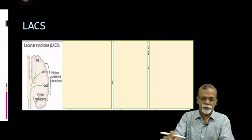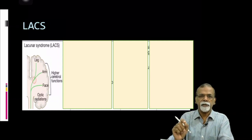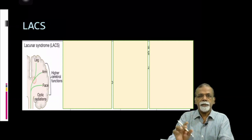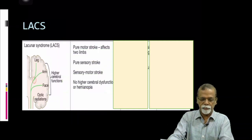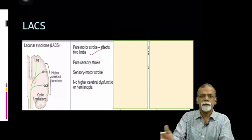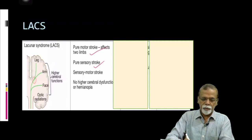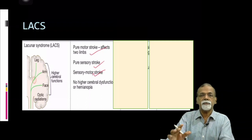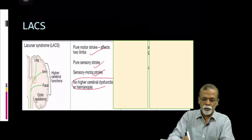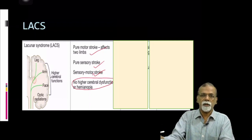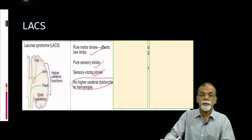Then comes lacunar strokes or lacunar syndromes. Lacunar syndrome means it is a very small infarct — the penetrating branches are involved and the size of the infarct is less than 2 millimeters. They are subcortical infarcts. The cortical dysfunction will not be there — you will not get aphasia, apraxia, agnosia, or hemianopia typically. That is the characteristic feature. The types include pure motor stroke, which is hemiparesis; pure sensory stroke from a subcortical infarct affecting the sensory tracts; and sometimes sensorimotor stroke. You should remember there are no higher cerebral dysfunctions. There will not be aphasia, apraxia, or cortical sensory loss.